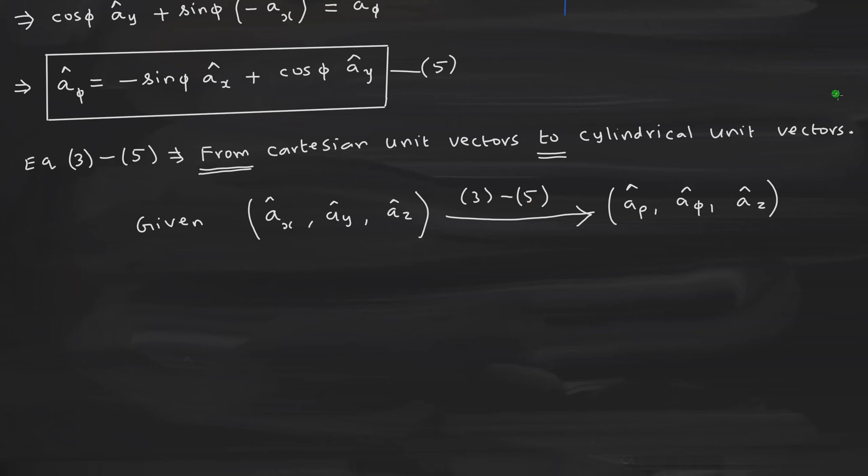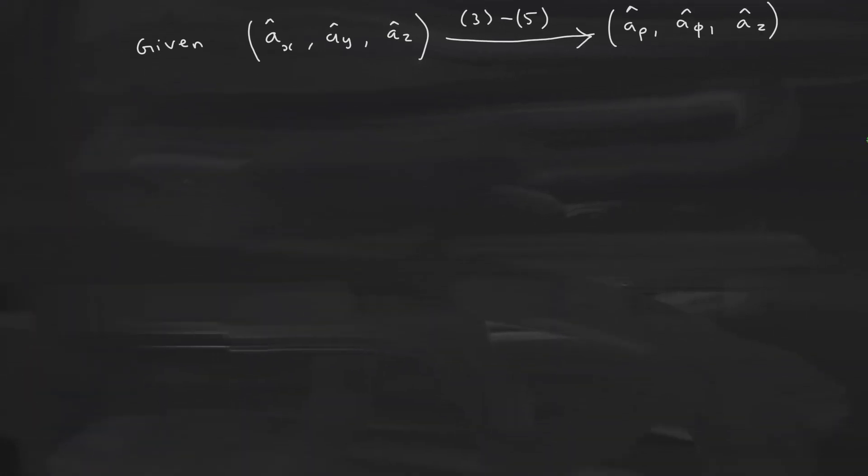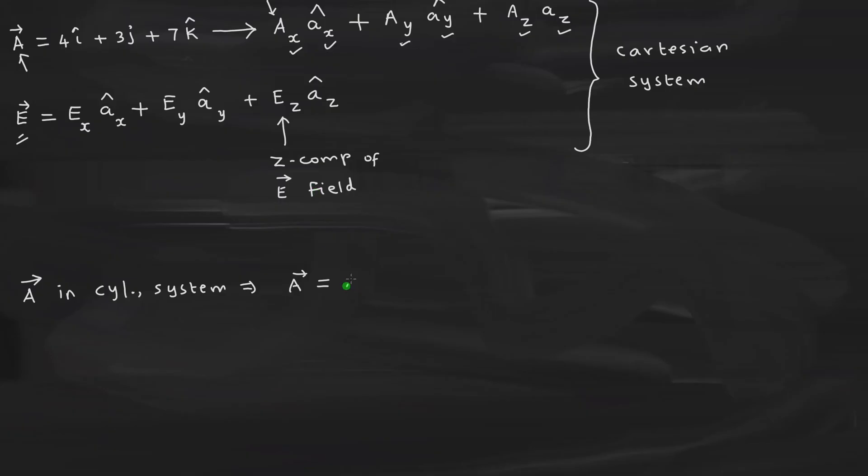Let us now see how do you usually write a vector. How do you write this? There will be a rho component. That means a radial component. The rho component is in the direction of rho plus there is an azimuthal component. Azimuthal component means the component in the phi direction. That will be in the phi direction plus there will be a component in the z direction. First you write the rho components. After that you write the phi components. Then you write down the z component.